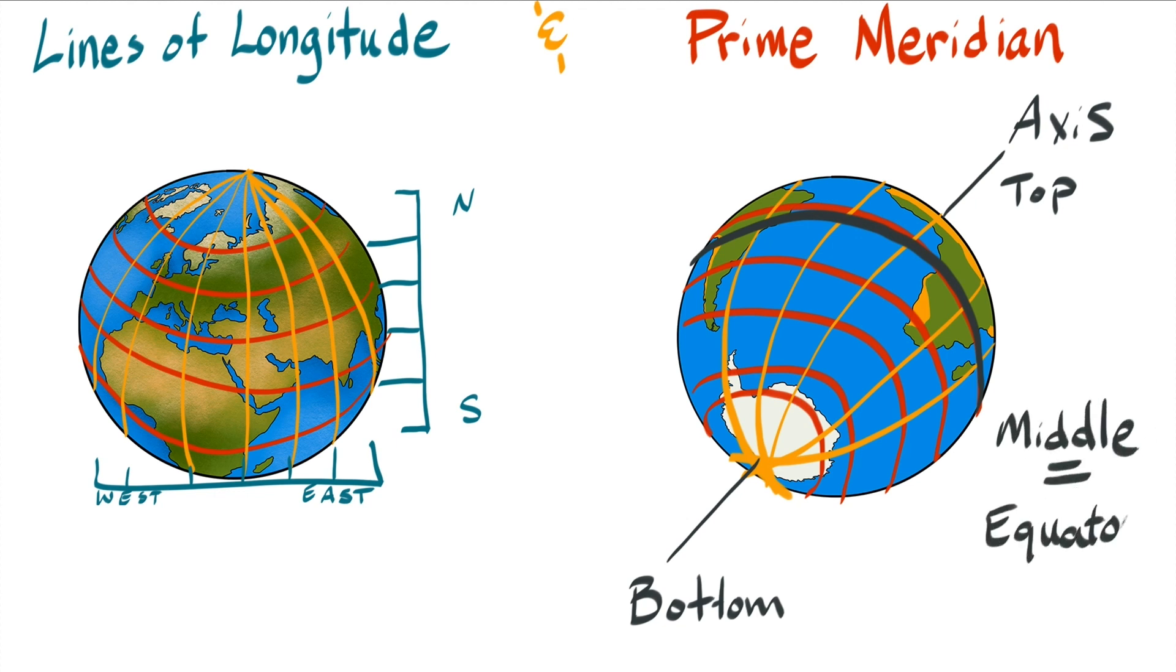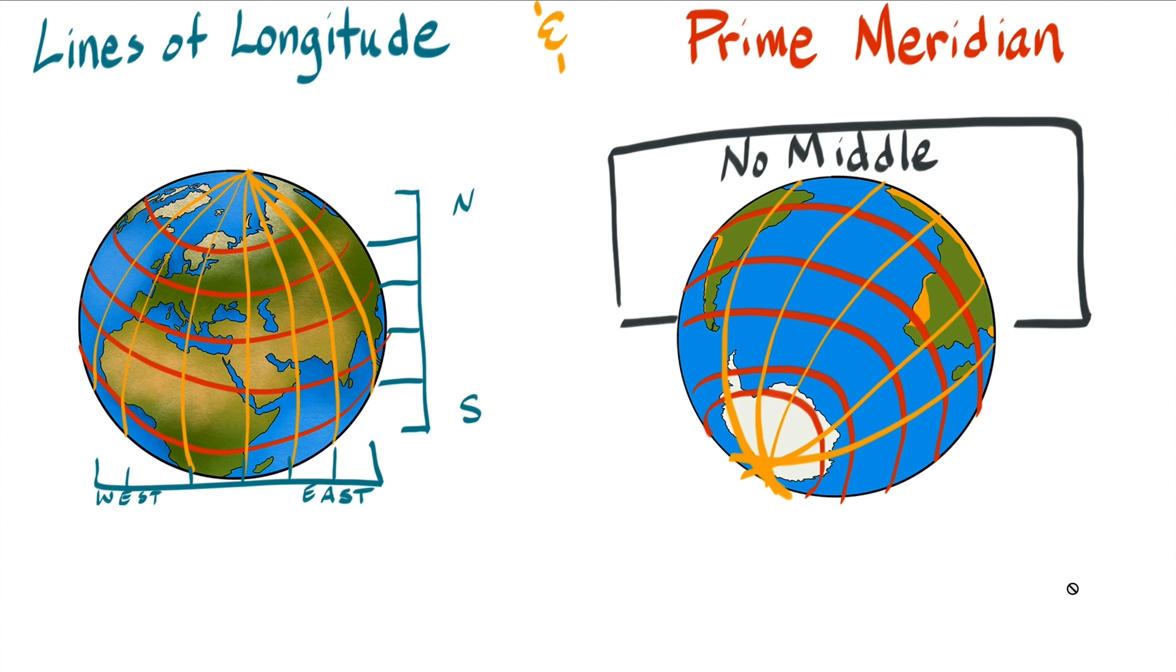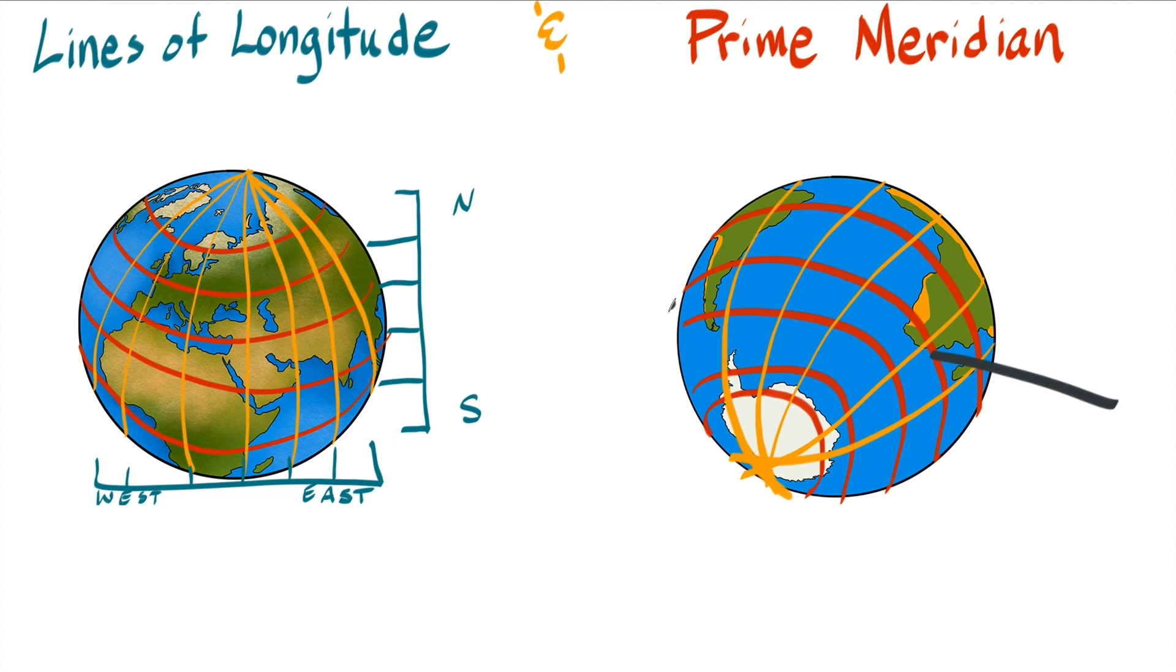But for meridians there is no middle, because the earth spins sideways. It doesn't matter which meridian you pick to be the main one. The main meridian wouldn't divide the earth based on daylight or seasons or anything; it exists just to make it easier for us to measure the location of something.